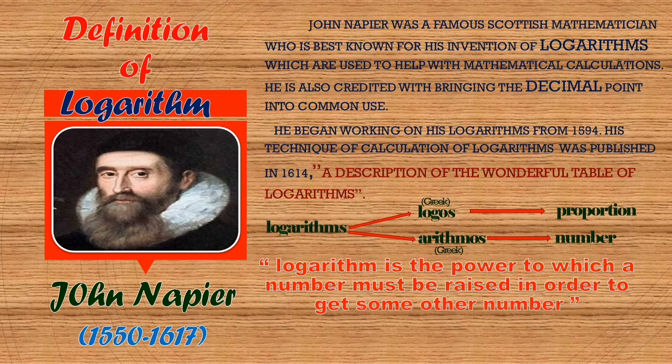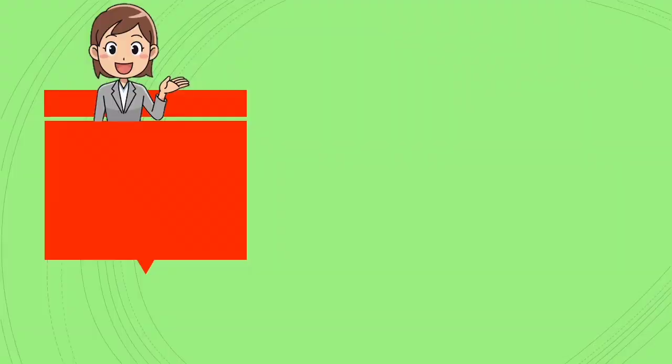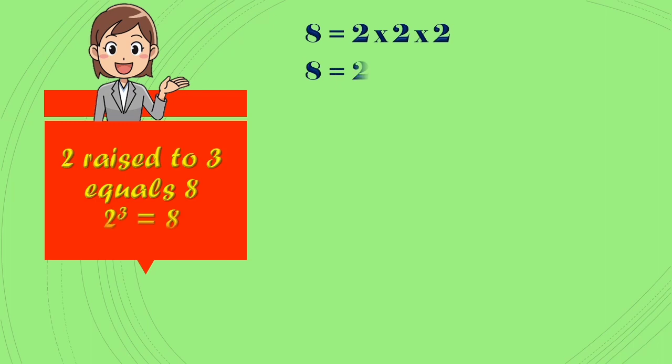Let us understand what is logarithm. The easiest way to explain what logarithm is, is just the inverse of taking the exponent of something. You know exponents very well, right? For example, how many twos must we multiply to get eight? Simply the answer is three times, so it can be written as 2 × 2 × 2, that is 2^3, that means 2 raised to 3 equals 8.